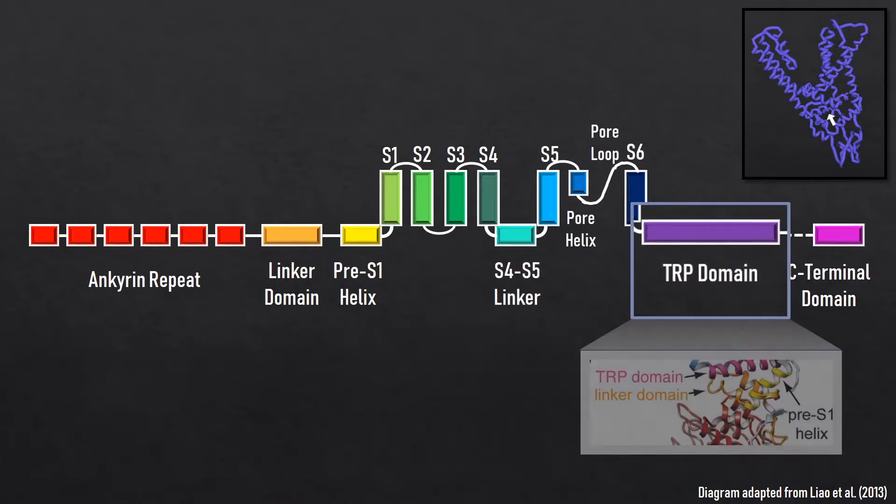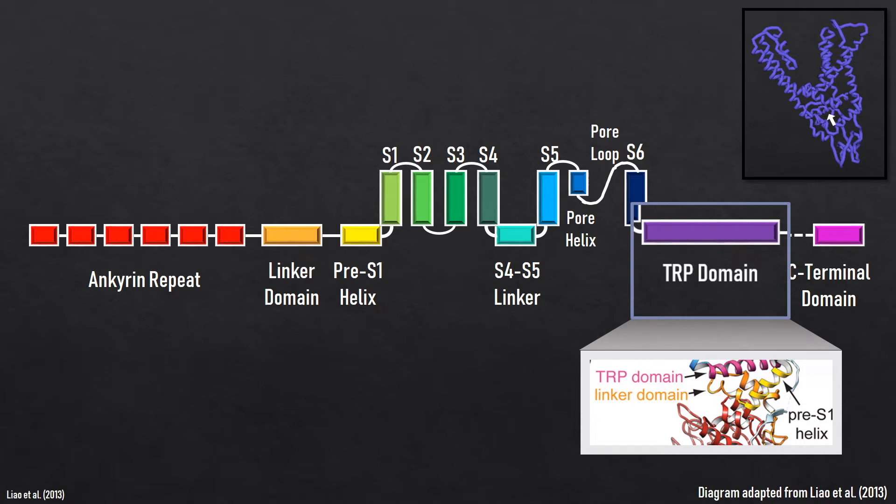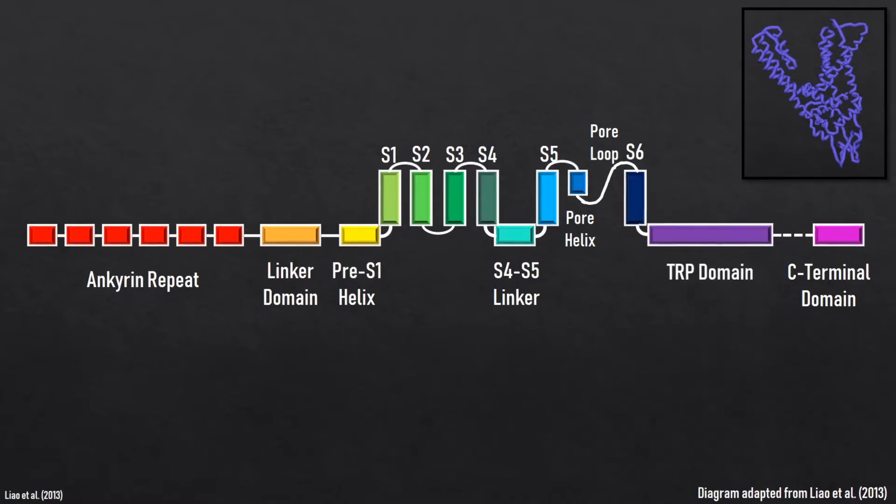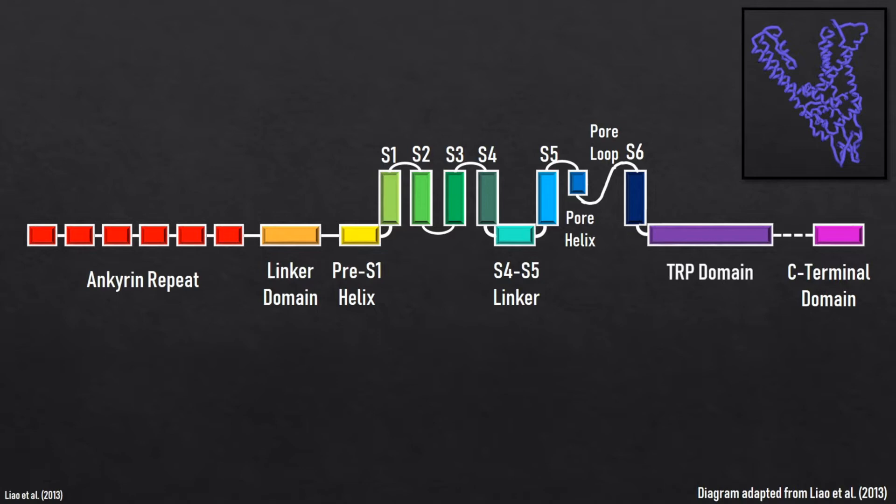The TRP domain, a helical segment found in all TRP receptors, connects the S6 and the C terminus. This helix forms hydrogen bonds with the pre-S1 helix and the S4-S5 linker. These interactions allow the TRP domain to act as a site through which pore conformation can be allosterically modulated.